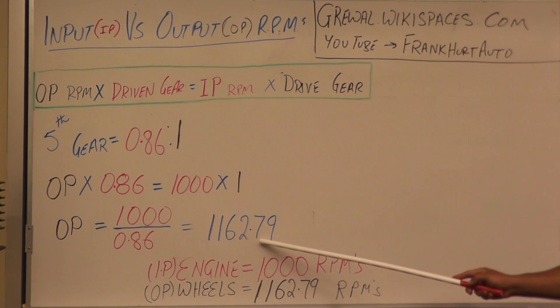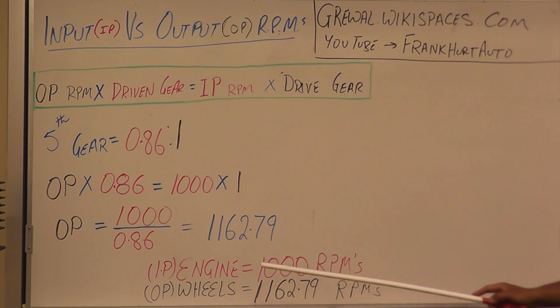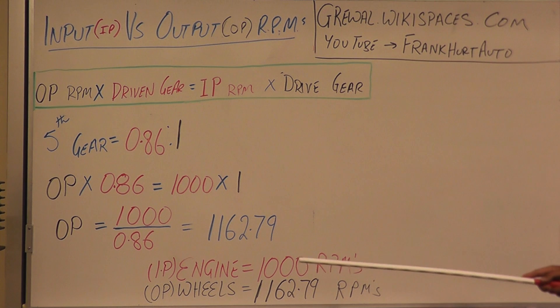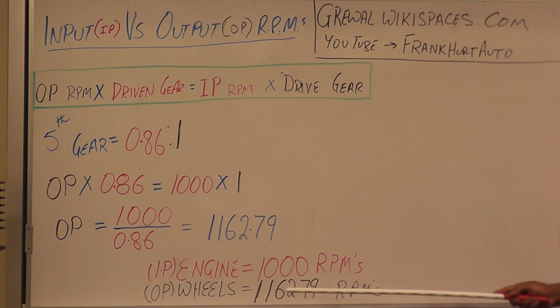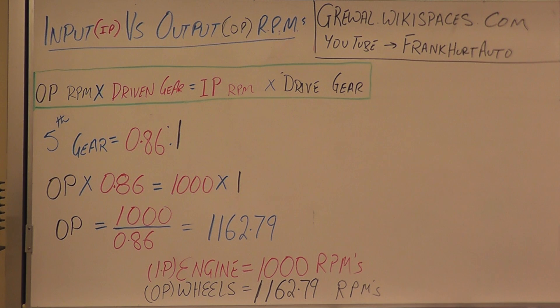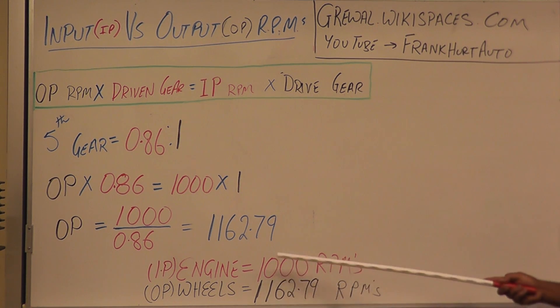Solving that equation: your engine is spinning at 1,000 RPMs and your wheels are spinning at approximately 1,162 RPMs, which is faster than your engine.